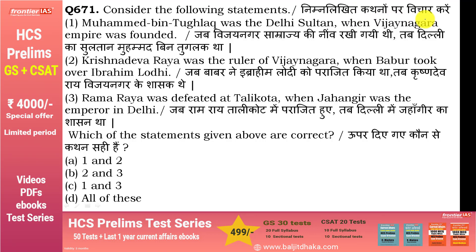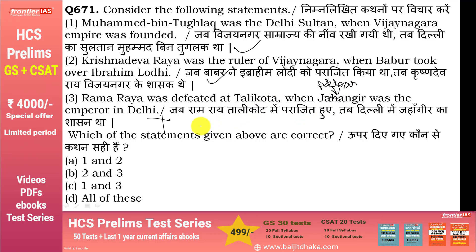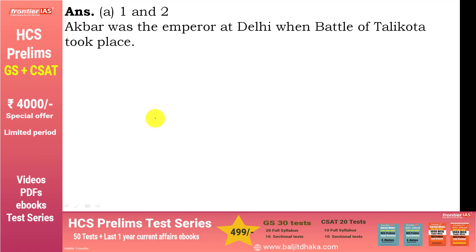Consider the following statements: Muhammad bin Tughlaq Delhi का sultan था जब Vijayanagara Empire found हुई — सही. Krishnadeva Rai विजयनगर के शासक थे जब Babur ने Ibrahim Lodi को हराया — सही. Ram Rai Talikota में पराजित हुए जब Jahangir emperor था — गलत, क्योंकि उस समय Jahangir नहीं, Akbar emperor था. तो correct answer option A — first and second statements सही हैं.